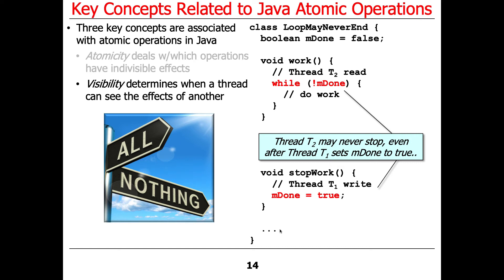It's kind of like if you had a roommate who took a call for you and wrote down the message on the palm of their hand, and then left. You'd have no idea that anything happened, because that information was never conveyed to you. Same kind of problem — the update is stuck in a cache and is not actually visible to the other thread.